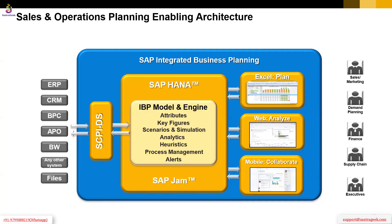Such enablement happens via specific apps within the web UI. As a consultant, when configuring the system, you use different apps within the web UI. There is a model configuration app where you generate the planning area, create new attributes or key figures, and set up roles and authorizations using specific apps. Excel is mostly used from a planner's perspective, while web UI is used for both consultant configuration and planner tasks. SAP has also enabled mobile synchronization — you can connect your iPhone to IBP, review alerts, review analytics, and access SAP Jam for collaboration.